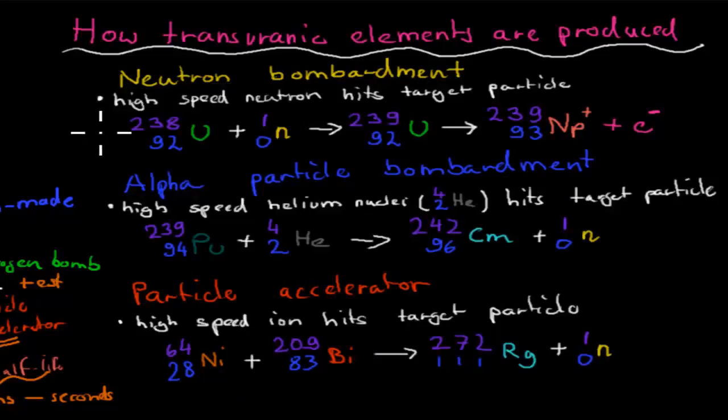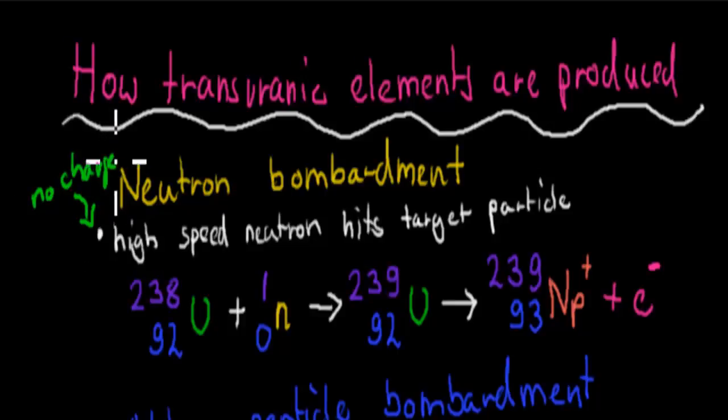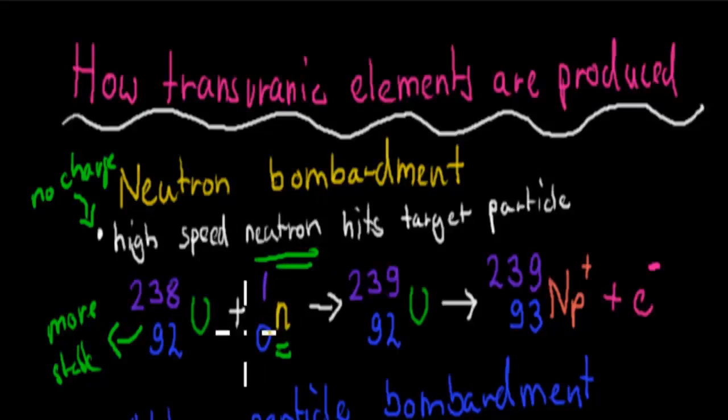I'll go over the actual way this works. So in neutron bombardment, we have high-speed neutrons which hit the particle. Again, these had no charge because they were a neutron. And what you can see here, we have uranium, which is stable—not stable, but because it has an atomic number of 92. But this is still more stable than what we're going to produce in a second. And this is natural. So uranium is the last natural occurring element. Afterwards, we'll go into the transuranic elements. So we've got uranium, which we bombard with a neutron. So this is our neutron bombardment, so high-speed neutron. This is our neutron here.